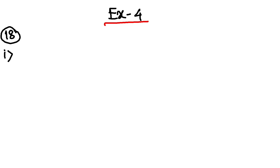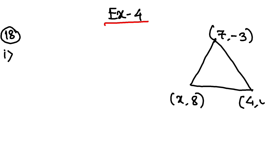So, the vertices of a triangle. Basically, if you read the question, understand that the triangle's three vertices are given: 7 comma minus 3, x comma 8, and 4 comma y, and the centroid is 2 comma minus 1. We have already discussed what is centroid in a previous video. You have to find the value of x and y.